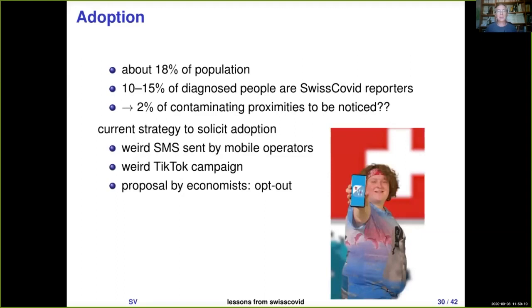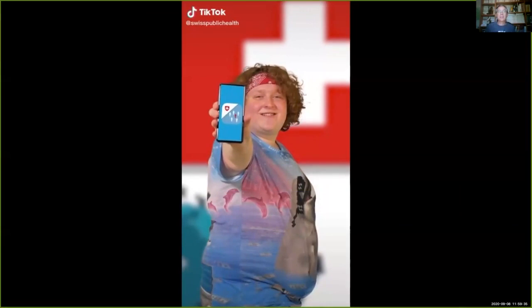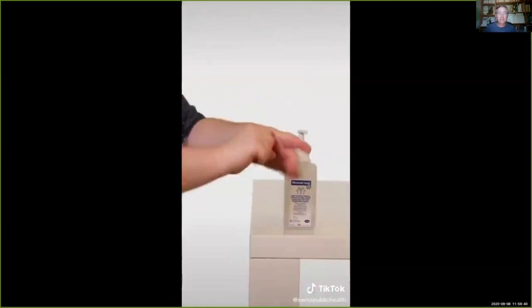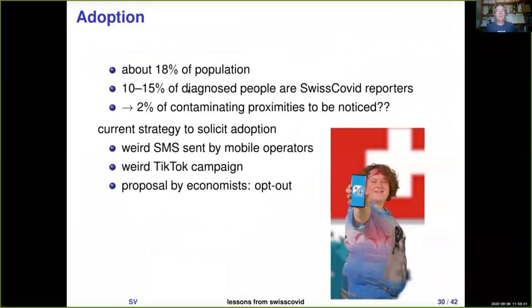One problem is how to increase adoption. Authorities have adopted some strategies — for instance, sending SMS to wide populations in Switzerland inviting them to install SwissCOVID, and being active on TikTok. There are also some proposals from economists suggesting that instead of asking people to install the app, it should be installed by default with an opt-out option. This has not been decided so far but it's likely to happen.